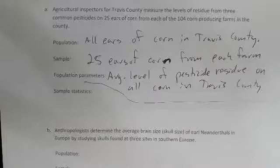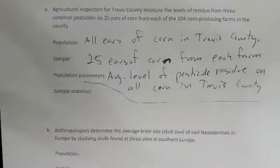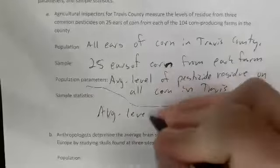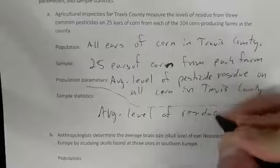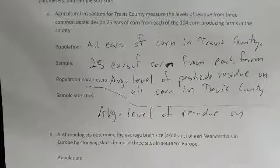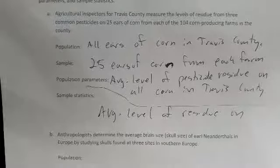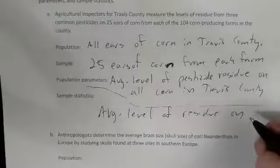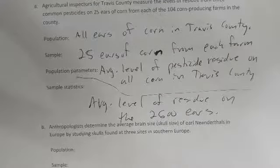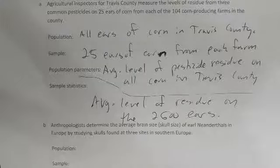The sample statistic is the average level of pesticide residue calculated from the 25 ears of corn from each farm — that's about 2,600 ears total. That's a lot of swabbing to do.